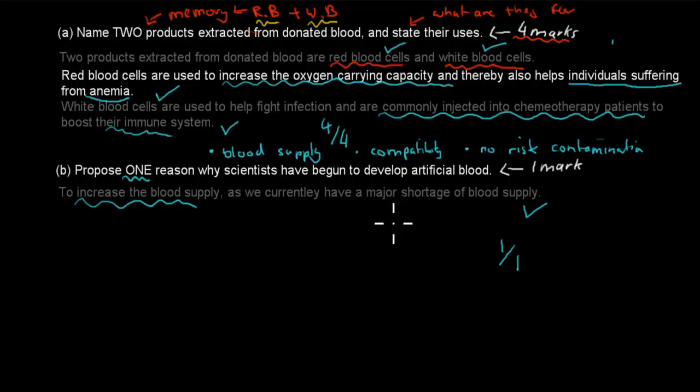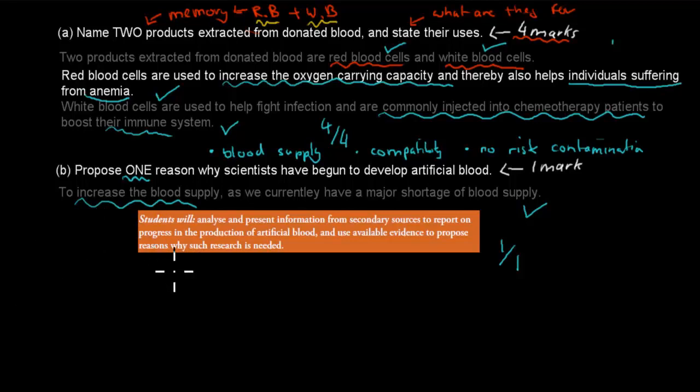For a relatively simple, straightforward question. And where this comes from, this comes from this question, this dot point. Students will propose reasons why such research is needed. So why do we need artificial blood comes from this dot point, a second-hand investigation.